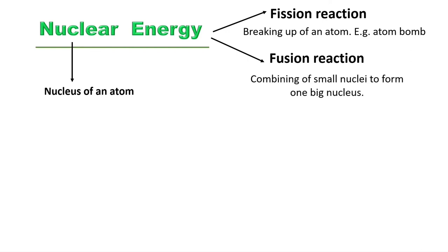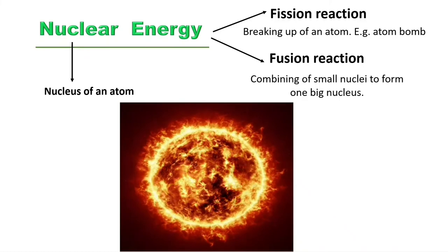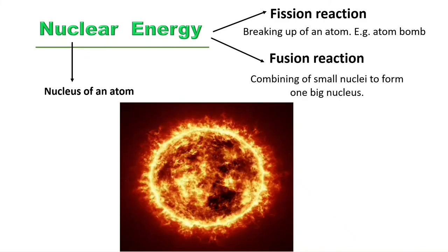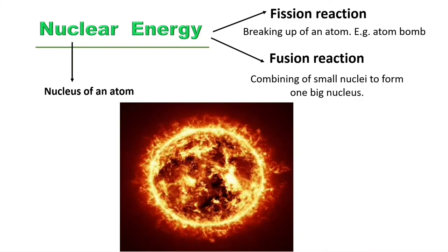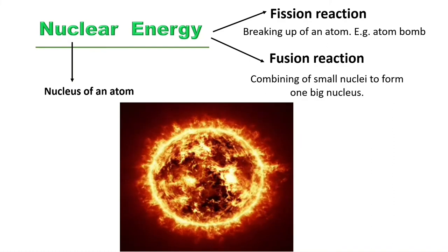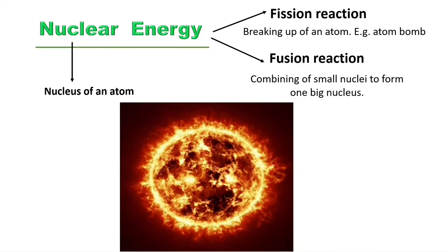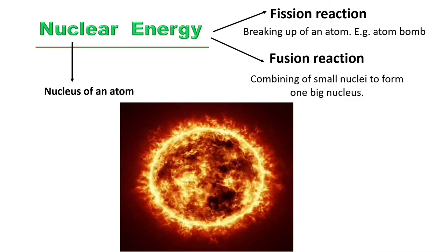The second reaction is fusion reaction, which is the inverse of fission. In fusion reaction, two small nuclei combine to form one large nucleus. The best example of fusion reaction is the sun, which has been giving out large amounts of heat energy and light energy due to fusion reactions taking place for billions of years. The sun is essentially a huge ball of fire producing heat, light, and sound energy through this continuous fusion reaction.